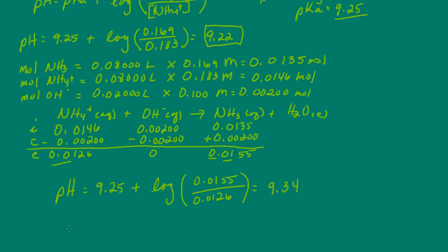We're not quite done yet because we need to find the change in pH. We start with 9.34, and the pH of the solution before any added hydroxide ion was 9.22. We end up with a pH change of 0.12.